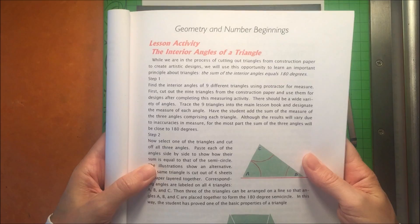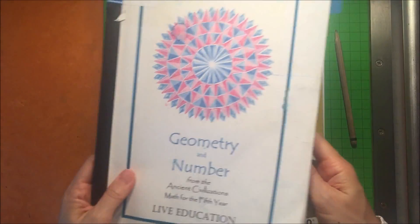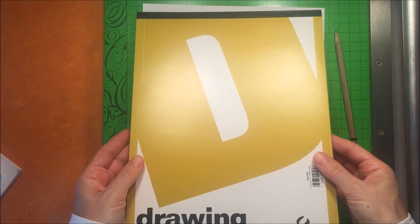We are working with a Waldorf curriculum from Live Education and in this lesson we are going to construct a large triangle and then take it apart.